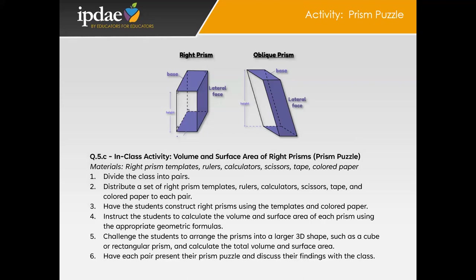Our next activity is the Prism Puzzle. The Prism Puzzle activity offers a hands-on and engaging way for students to learn about the volume and surface area of right prisms. By constructing their own prisms and arranging them into larger 3D shapes, students will gain a deeper understanding of this geometric concept. Start by dividing the class into pairs. Gather the necessary materials, including right prism templates, rulers, calculators, scissors, tape, and colored paper. Distribute the materials to each group.